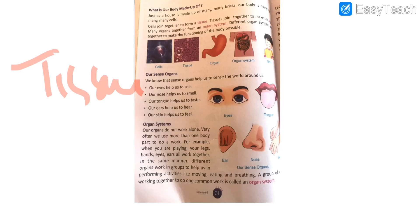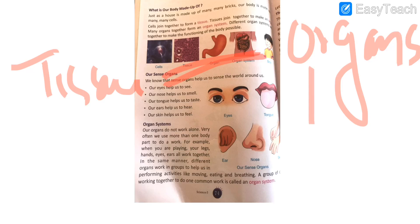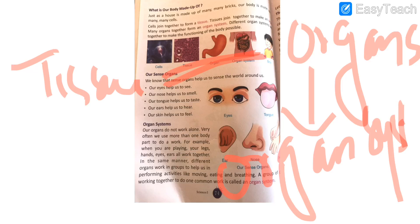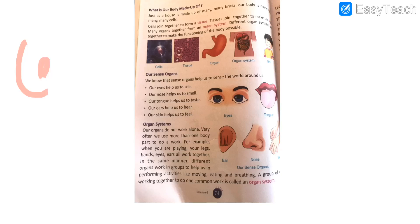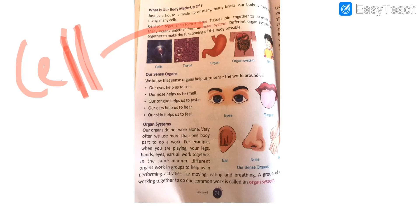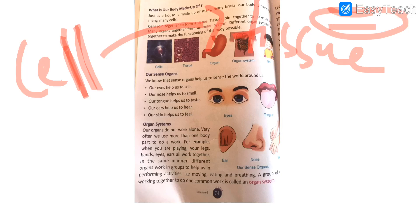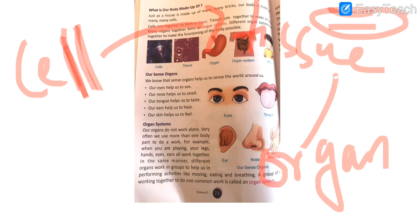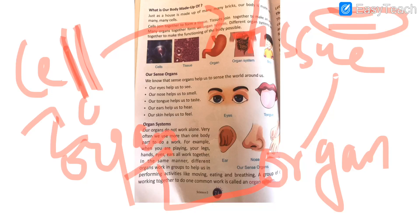Tissues when joined give rise to an organ, and these organs when joined give rise to an organ system. So the cell is the basic unit of our body. When cells join they form tissue — tissue is a group of cells. When tissues join they form an organ, and when organs join they form an organ system, giving rise to a complete human being.